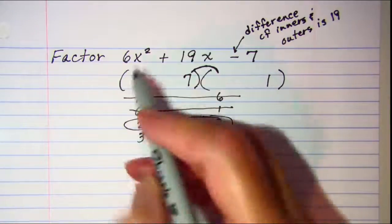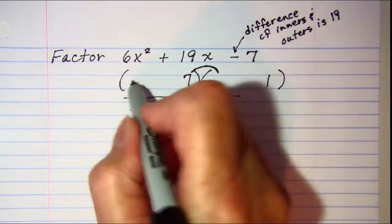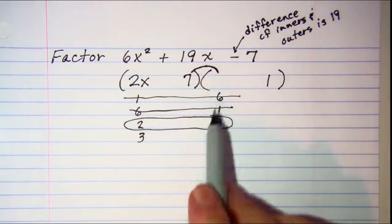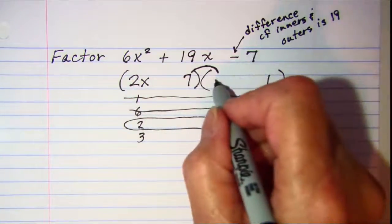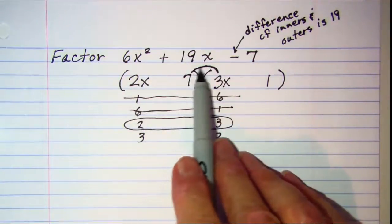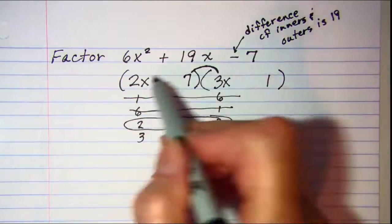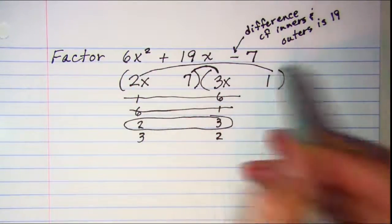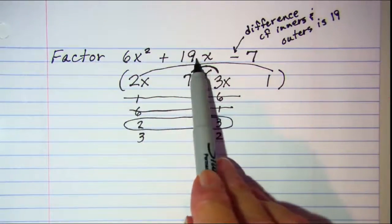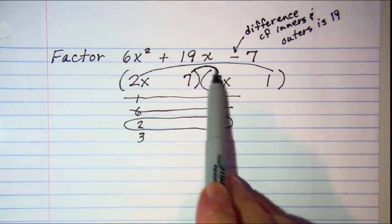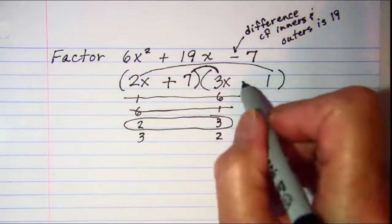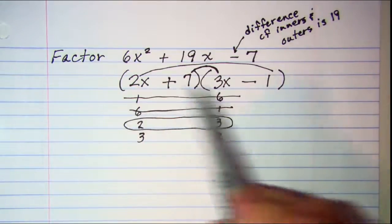So my 2 is going to go in this space and I'll write it 2x because I need an x squared there when I multiply. And my 3 is going to go here, 3x. So my inner product is 21x. My outer product is 2x. I need the sum of those two to be a positive 19. So my bigger product, the 21x, needs to be positive. And then this will be minus because remember they had to be different signs.